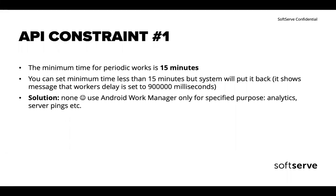A key constraint to consider: the worker will run in periodic mode only once every 15 minutes minimum. You cannot schedule workers to run every 30 seconds or even every minute — if you set a shorter time, the delay will be capped at 15 minutes. If you need periodic work every second, you should consider a different well-known solution. If you really need something running every minute, maybe you need a worker that retries itself with a long-polling mechanism, depending on your application behavior.